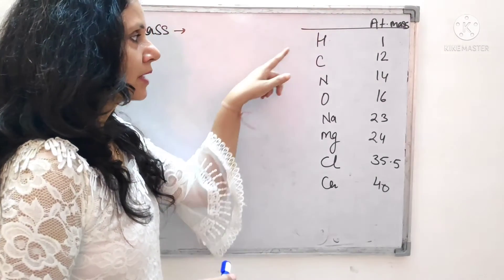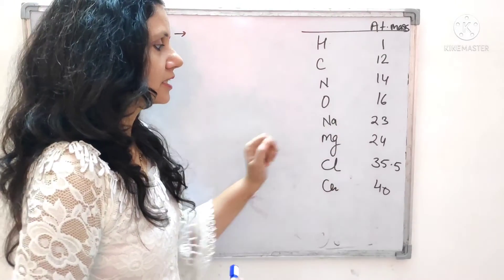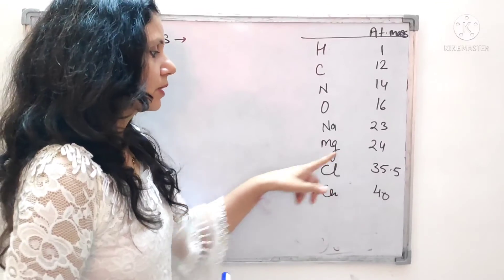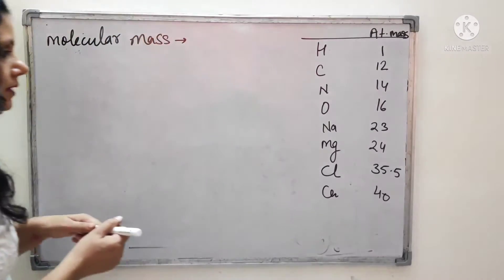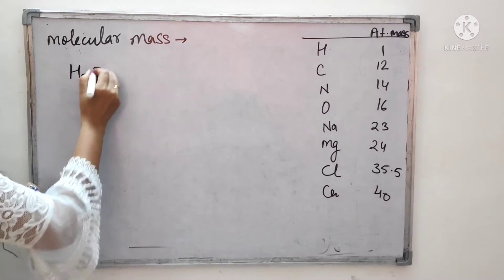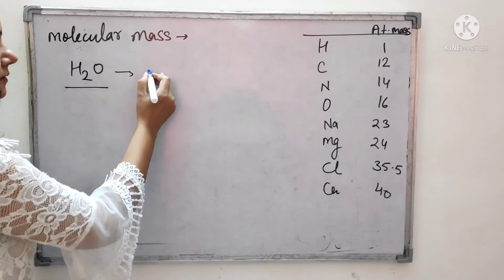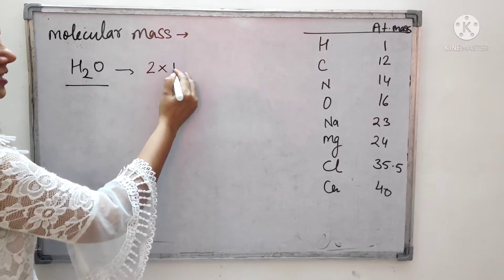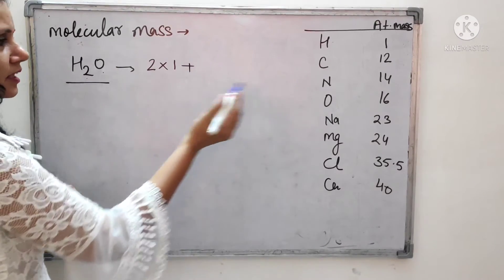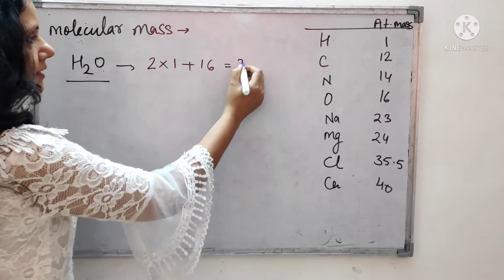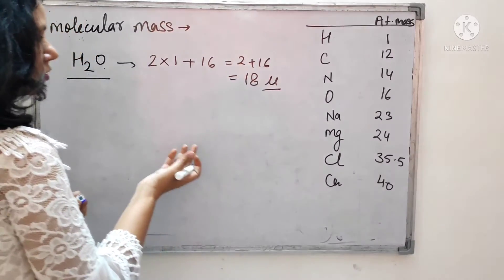Here is the atomic mass table: hydrogen = 1, carbon = 12, nitrogen = 14, oxygen = 16, sodium = 23, magnesium = 24, chlorine = 35.5, calcium = 40. Using this table: H2O (water) has 2 hydrogen atoms (atomic mass 1 each) plus 1 oxygen (atomic mass 16), so the molecular mass is 2 + 16 = 18 u. For CO2 (carbon dioxide): carbon is 12, plus 2 oxygen atoms each having 16, so 12 + 32 = 44 u.